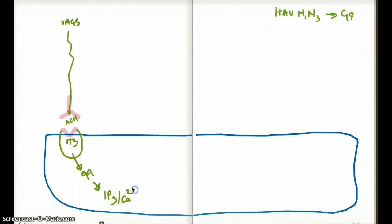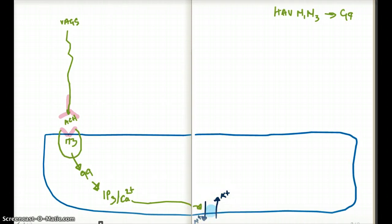This is going to be through the vagus pathway. Now this IP3 and calcium is in turn going to stimulate our potassium hydrogen ATPase, which is going to force hydrogen to come out and potassium to go inside the cell.